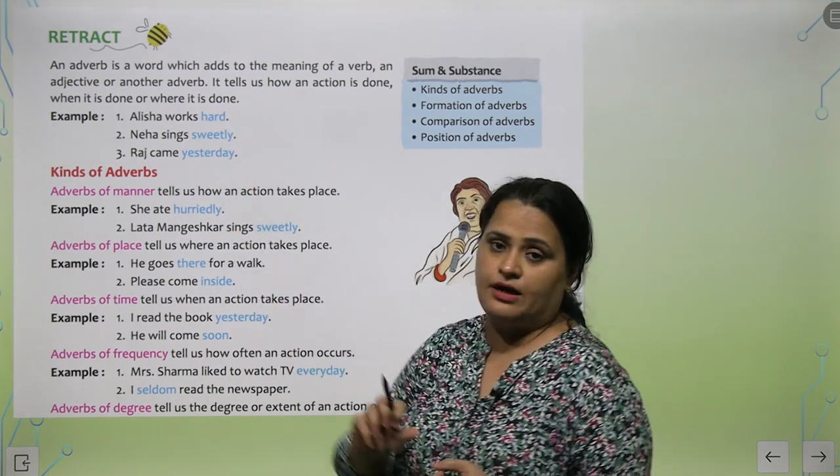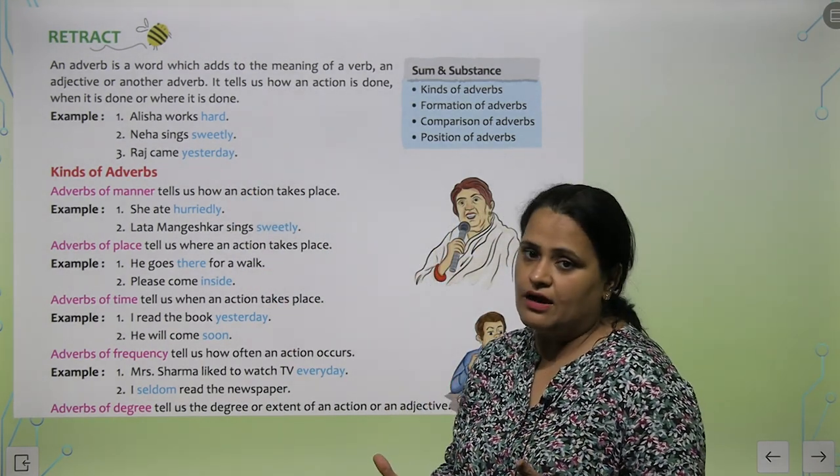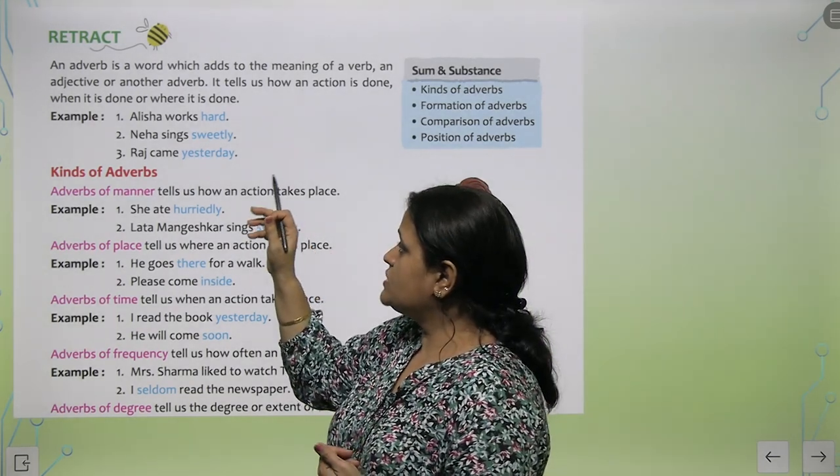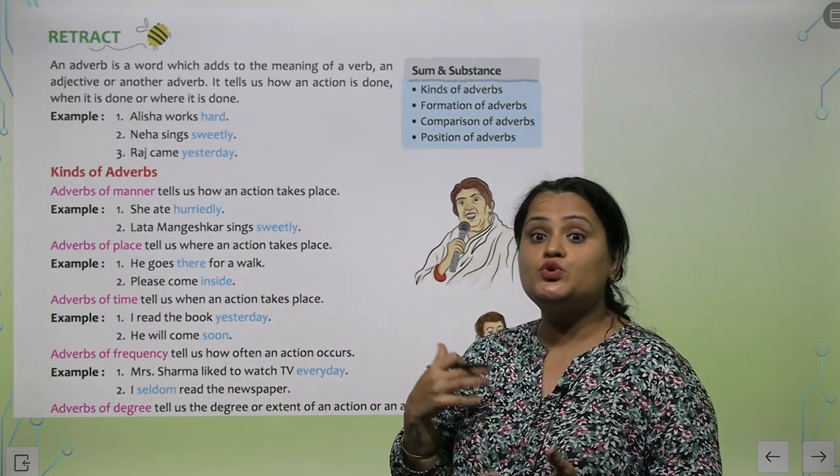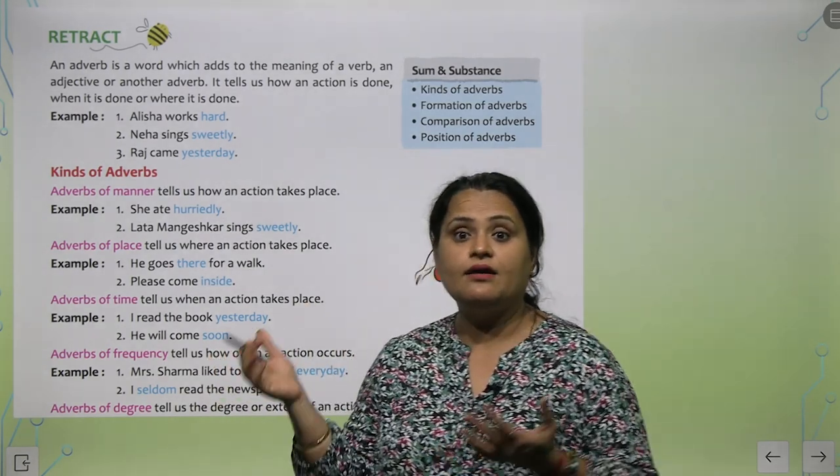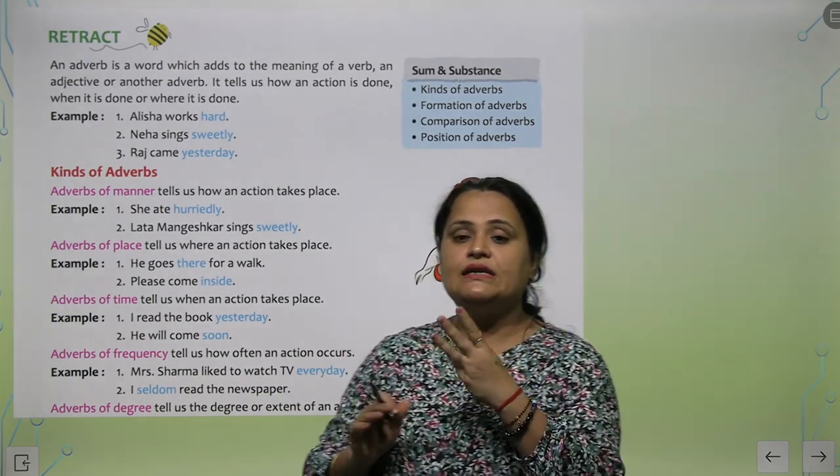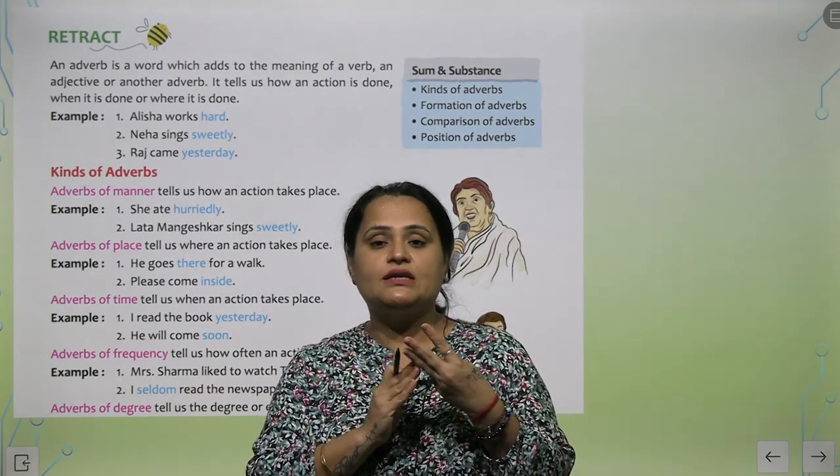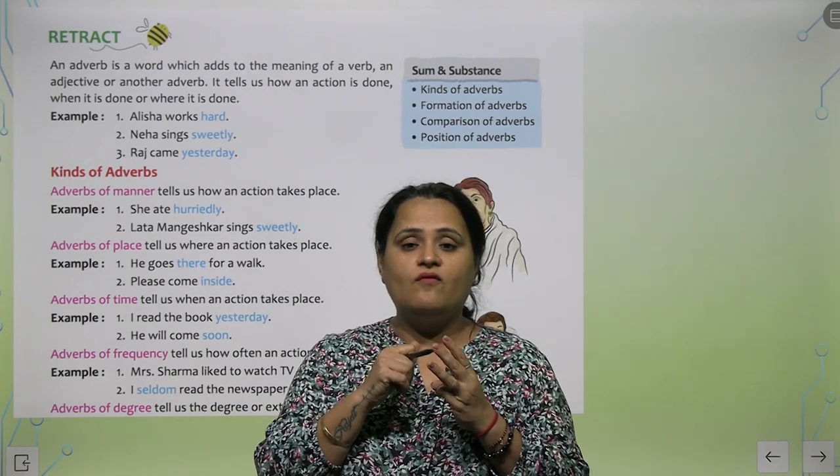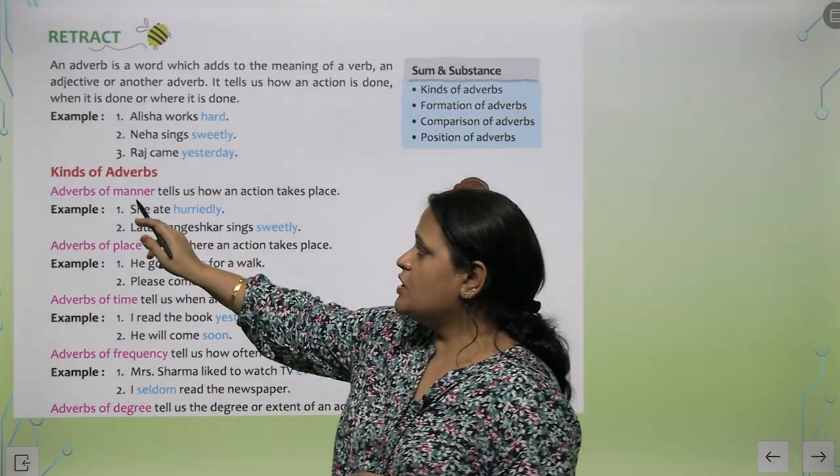Examples: Alisha works hard. How does Alisha work? Hard, meaning she works with effort. Neha sings sweetly - how does she sing? Sweetly. Raj came yesterday - when did Raj come? Yesterday. So you get three basic questions answered: How, when and where.